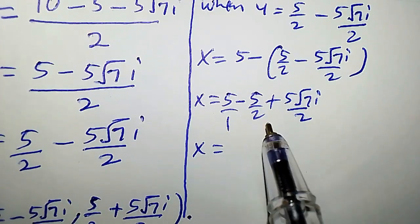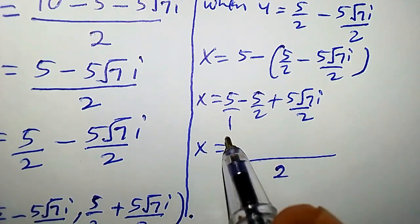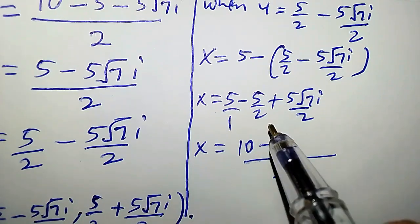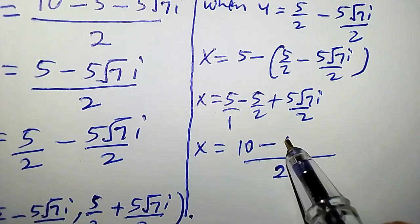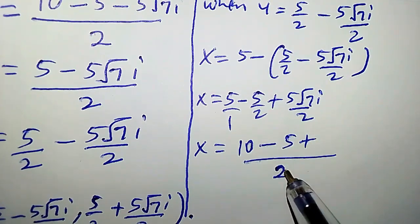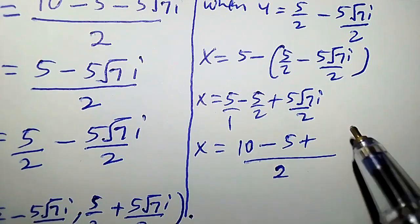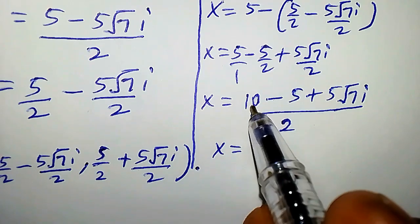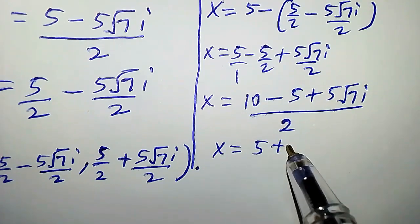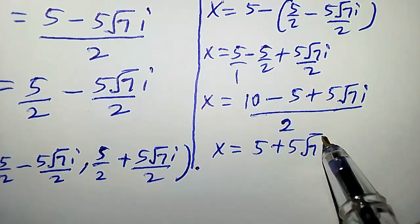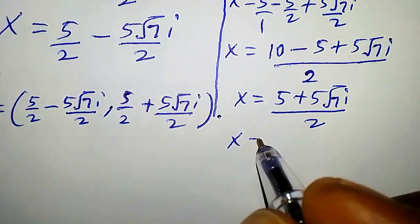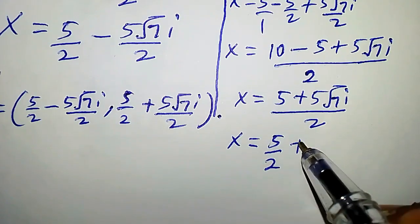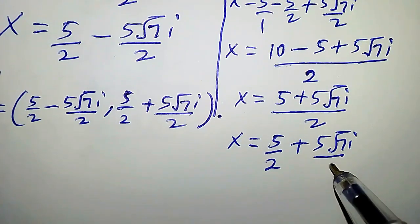Similarly, the common denominator is 2, so 5 becomes 10 over 2, minus 5 over 2 gives 5 over 2, plus 5 root 7i over 2. So x equals 10 minus 5, that is 5, plus 5 root 7i, all over 2. This can be written as x equals 5 over 2 plus 5 root 7i divided by 2.